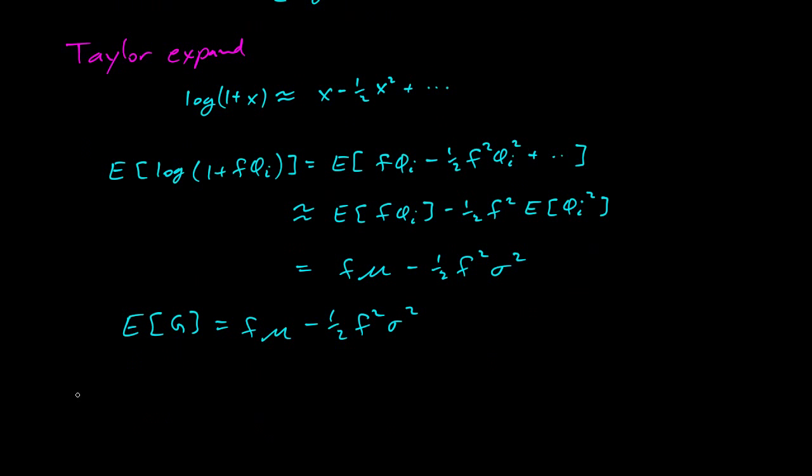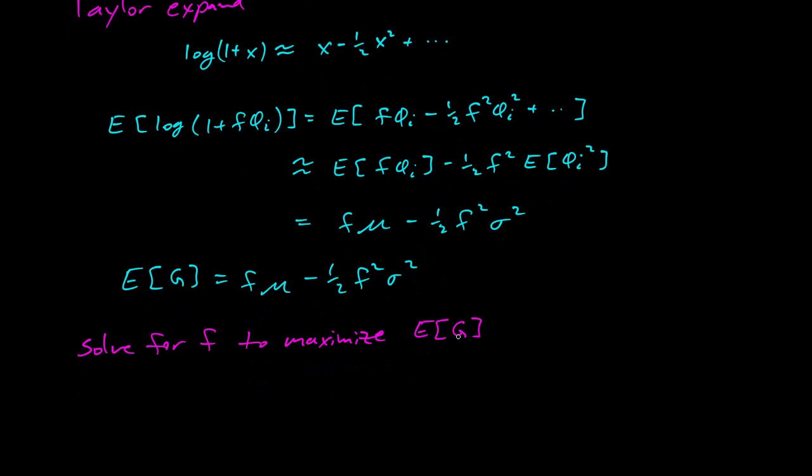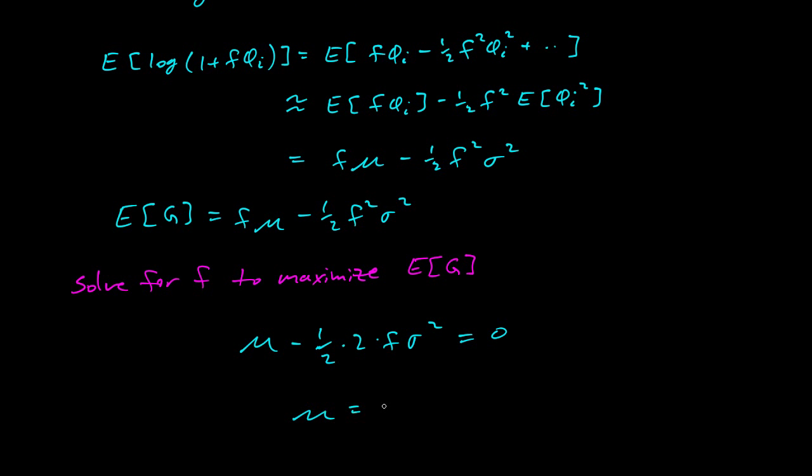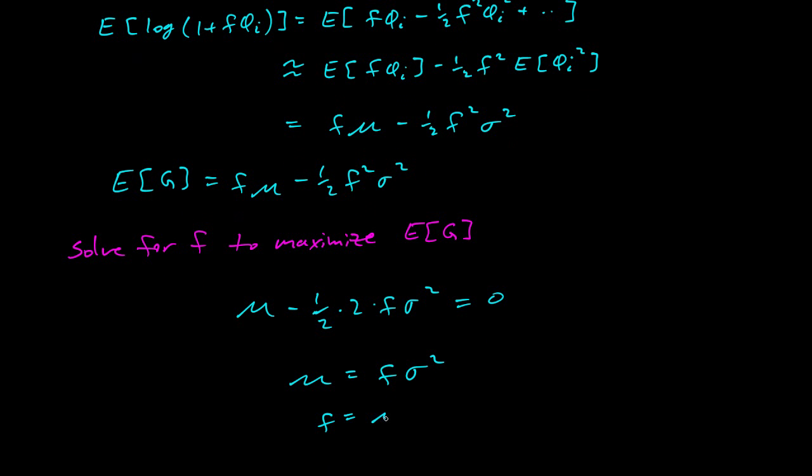Next step is to solve for f to maximize E[G]. So we're solving the fraction that we bet each hand to maximize our expected growth of our bankroll. So how do you maximize a function? You take the derivative, set it equal to 0, make sure it's curved the right way. So what's the derivative? So here's the function. What's the derivative with respect to f? It's μ minus 1 half times 2 times f·σ squared. Set that equal to 0, solve for f.